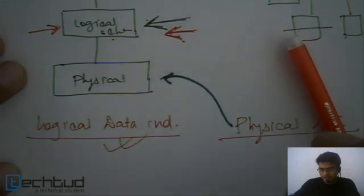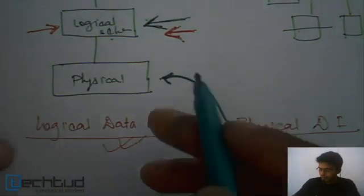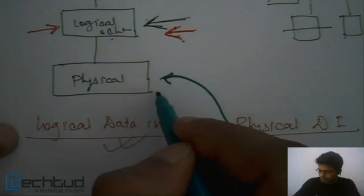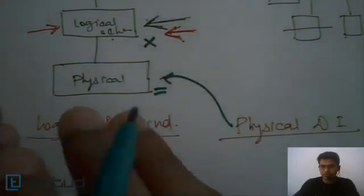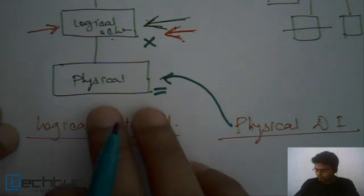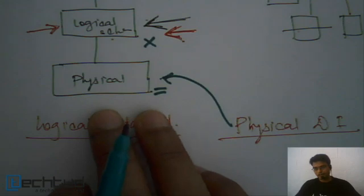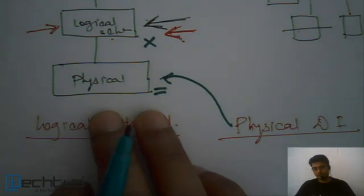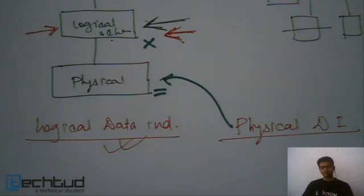Physical data independence is the capacity to change the physical schema without affecting the logical schema. We are making a change at the physical level, but the relational schema and the logical schema remain the same.